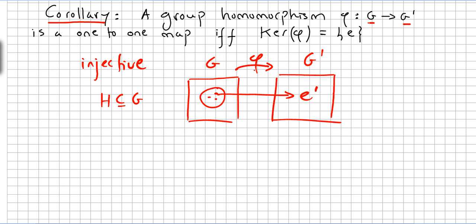So Φ is a homomorphism. Don't forget that the homomorphism is an operation, like Φ of A·B equals Φ of A operation prime Φ of B, for all A and B in G. This is a homomorphism.